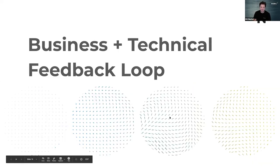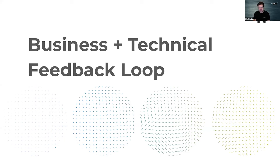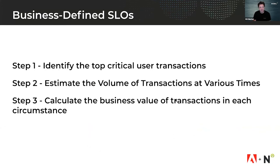The last piece Kit wants to talk about is the business-technical feedback loop. Service level objectives create an important feedback loop between the business side and the technical side when balancing engineering effort and customer experience. One way to think about this is to come from the top down and look at how to define SLOs from the business. You may have had the discussion with business stakeholders asking how many nines you want and how reliable it should be — and you may hear 'I want it to be 100% reliable, 200% secure, and 300% more features than anybody else.' Of course, that's not a realistic answer to what the SLO should be.